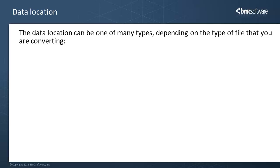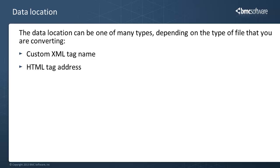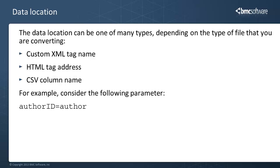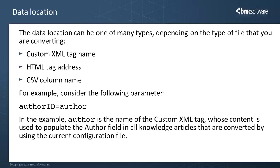The data component of a parameter is used to specify the location of a field in the source file. Depending on the type of file that you want to convert, the data location might be the name of a tag in a custom XML file, the address of a tag in an HTML file, or the name of a column in a CSV file. For example, consider a parameter where "Author" is the name of the custom XML tag whose content is used to populate the Author field in all knowledge articles converted using the current configuration file.